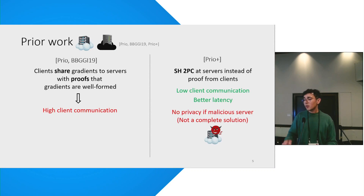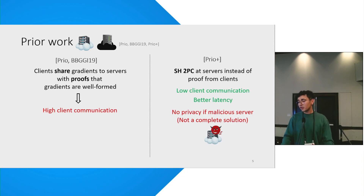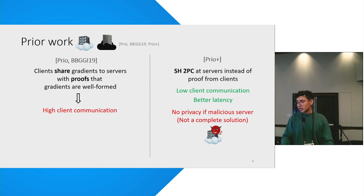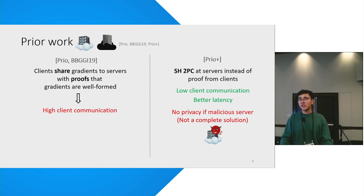However, it has one big problem. The problem is that you don't have any privacy if one of the two servers is malicious, which is why this is not a complete solution for the federated learning problem. Just to say the same thing in different words — I initially pointed out two problems with federated learning: a privacy problem and a problem of malformed gradients. And this work does not solve one of those problems.